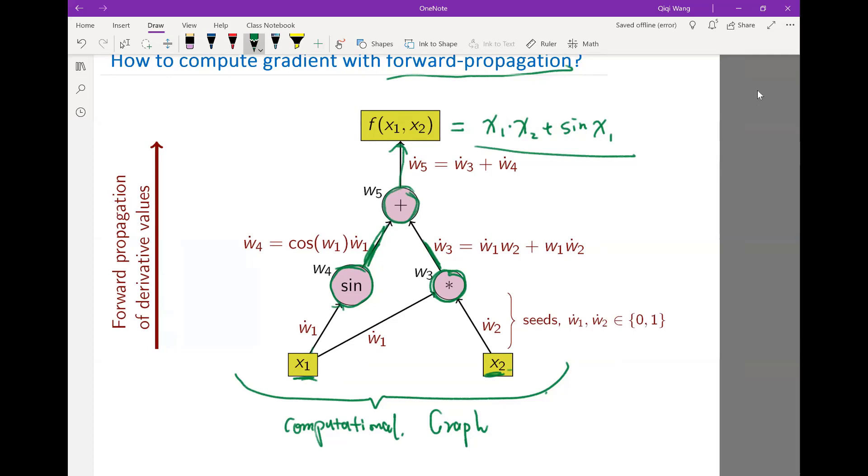The forward propagation method for computing the derivative basically looks at the computation graph and takes derivative of every operation in this computational graph. For example, this graph here illustrates the procedure for differentiating the output with respect to the second design variable x2.